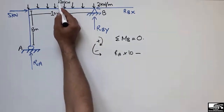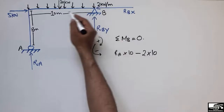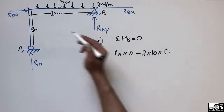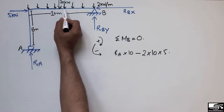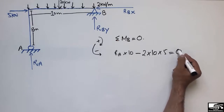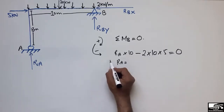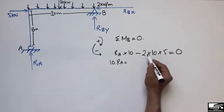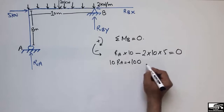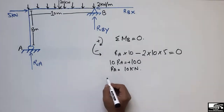The uniformly distributed load is converted to a concentrated load of 2 × 10 = 20 kN, acting at the center with a moment arm of 5 meters. The 5 kN horizontal force has no moment arm about point B, so its contribution is zero. Solving the moment equation: RA × 10 = 20 × 5 = 100, so RA comes out to be 10 kN.